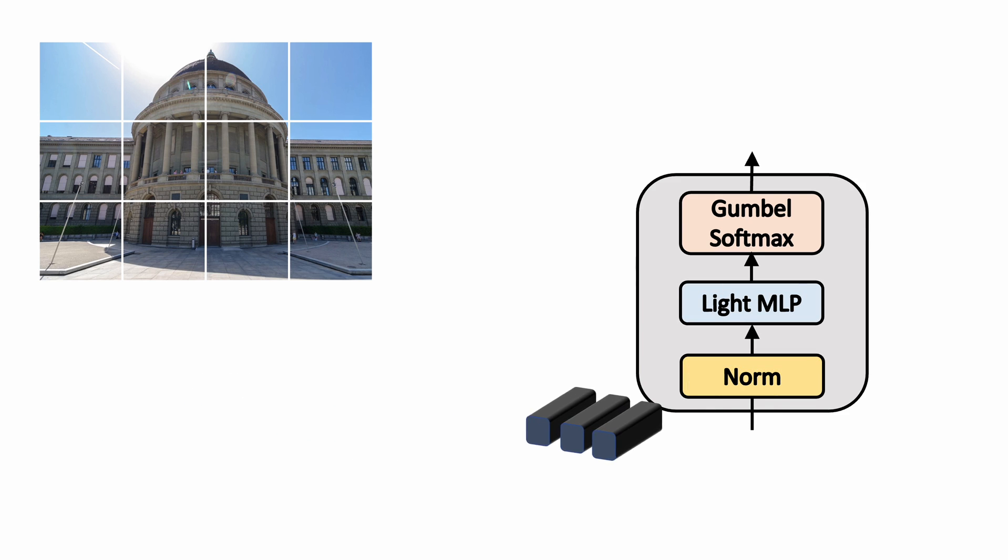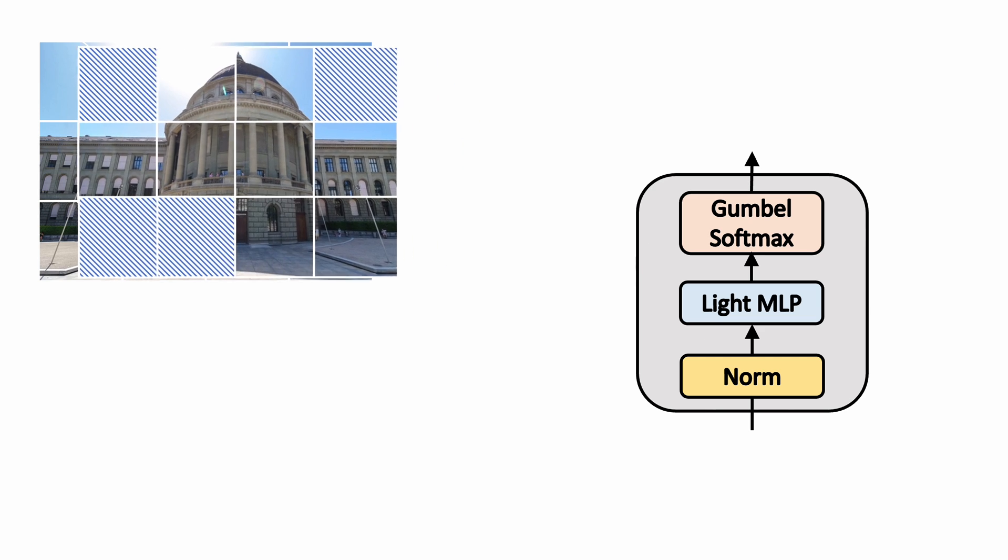The process begins with splitting an image into non-overlapping patches and transforming them to tokens by a linear projection. Then, the tokens are passed through a gating network and produce per token masks indicating which tokens to use for the VIT block.